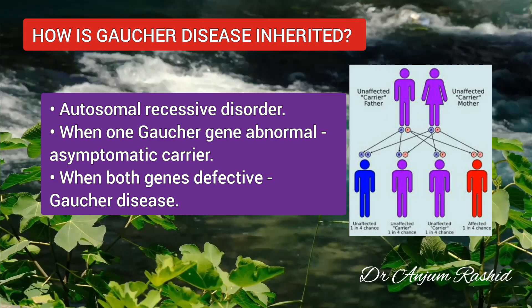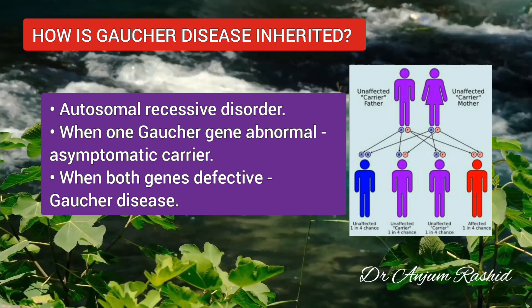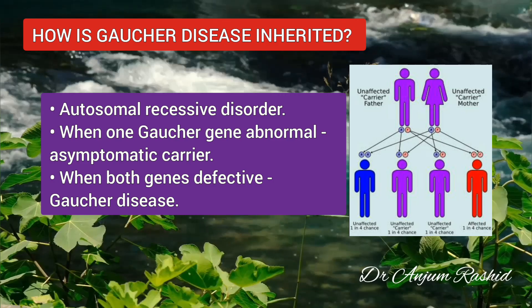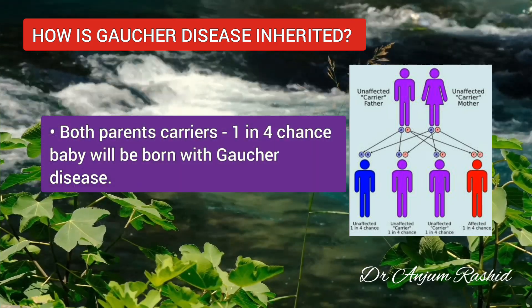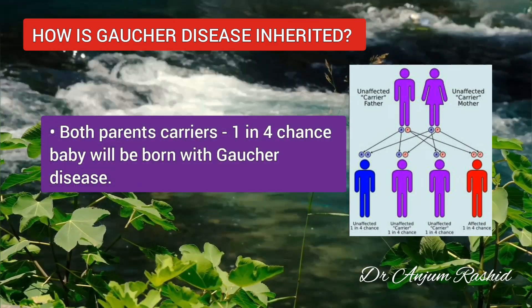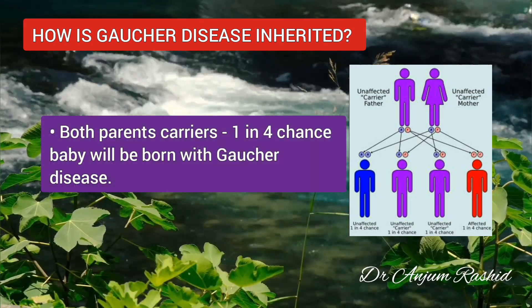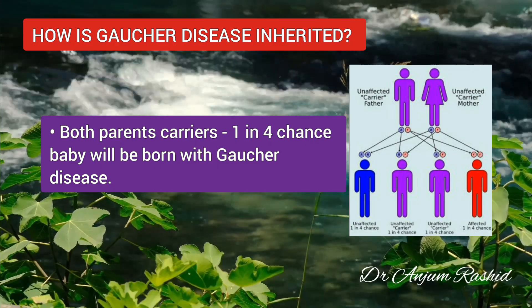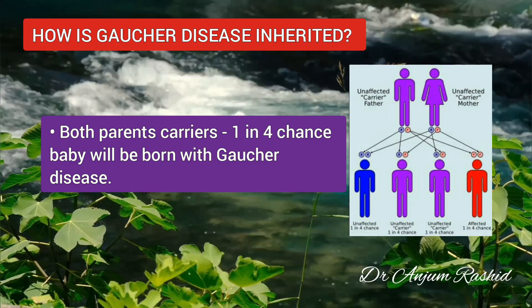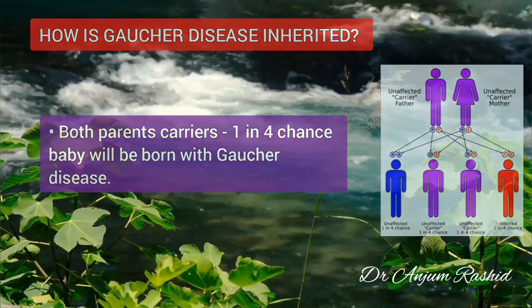When both genes in the pair are defective, a person will have Gaucher disease. When both parents are carriers, each pregnancy has a 1 in 4 chance that the baby will be born with Gaucher disease.